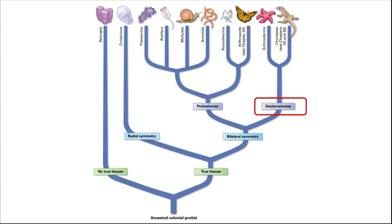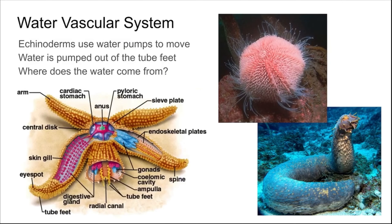Now that we've covered several kinds of protostomes, let's look at the deuterostomes. The first group within the deuterostomes that we'll look at are the echinoderms. The echinoderms incorporate what's known as a water vascular system, which can be thought of as a system of water pumps. Those pumps operate several different small appendages called tube feet. You can see several of those tube feet exiting the exoskeleton. On the bottom right is a sea cucumber, another interesting example of an echinoderm.